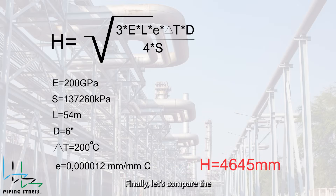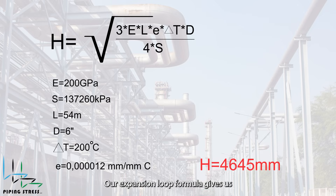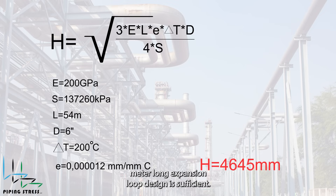Finally, let's compare the hand calculation with our design. In our CAESAR II model, we designed the expansion loop with 6 meters long. Our expansion loop formula gives us 4.6 meters. So, the 6-meter long expansion loop design is sufficient.